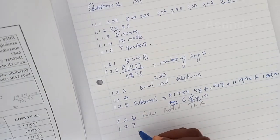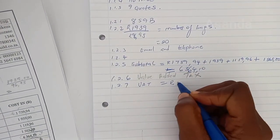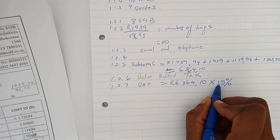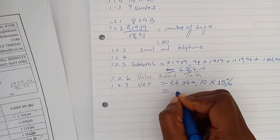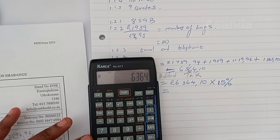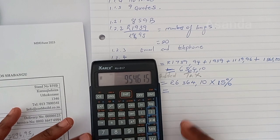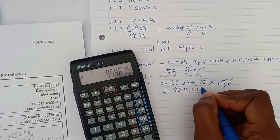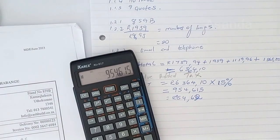VAT equals R6,364.10 multiplied by 15% — we multiply by 15%, not 115%, so we get only the VAT portion. Calculating: R6,364.10 × 15% ÷ 100% = R954.62.